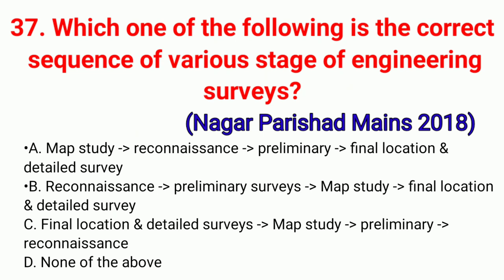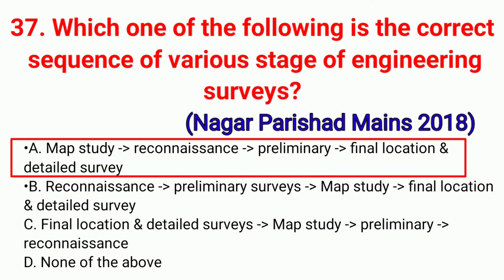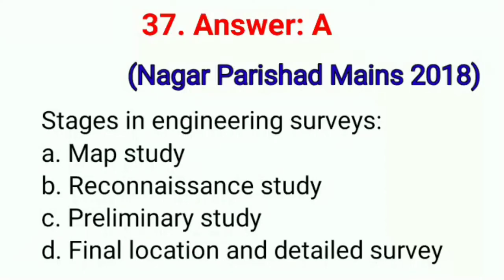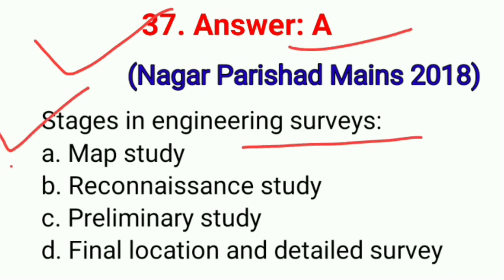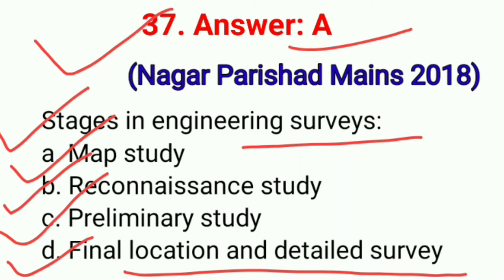Question No. 37. Which one of the following is the correct sequence of various stages of engineering surveys? Correct option A: Map study, Reconnaissance, Preliminary, Final location and detailed survey. Stages in engineering surveys: first, map study; second, Reconnaissance study; third, preliminary study; and last, final location and detailed survey. Correct option A.